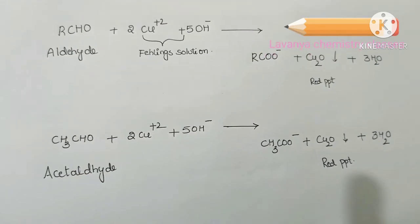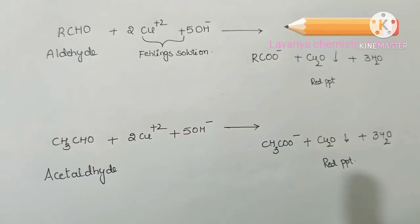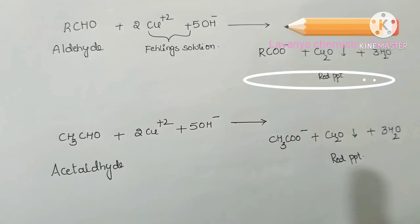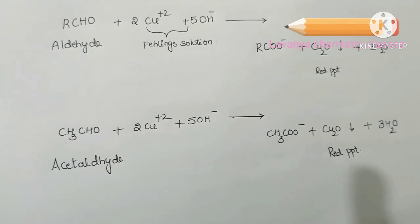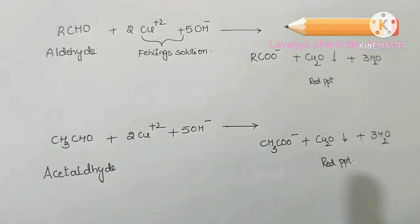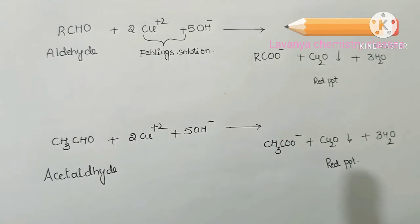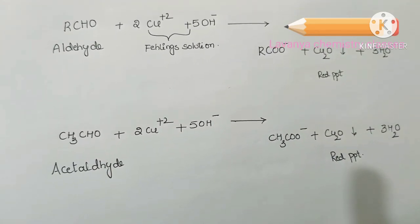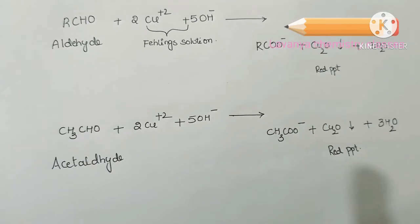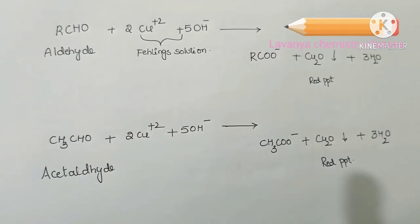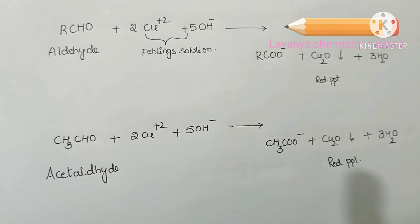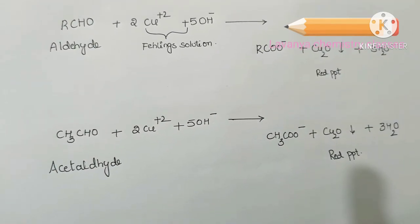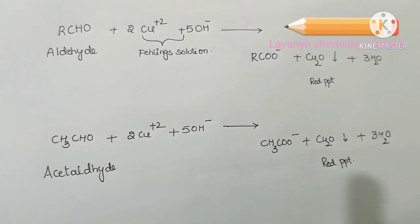For example, taking acetaldehyde (where R is an alkyl group) reacting with Fehling's solution: acetaldehyde reacts with Fehling's solution to produce acetic acid and a red color precipitate of cuprous oxide (Cu₂O) along with 3H₂O. This is the Fehling's solution reaction test.